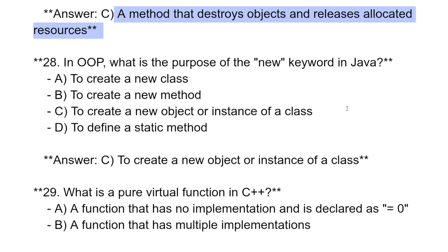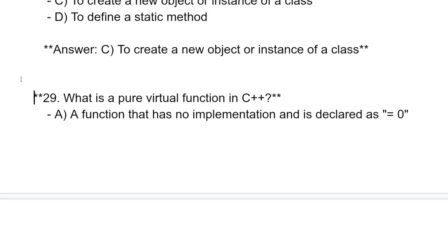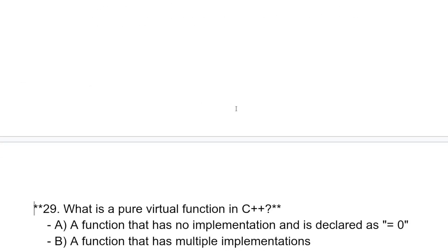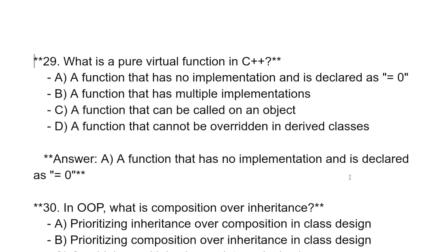In OOP, what is the purpose of the new keyword in Java? To create a new object or instance of the class. What is the pure virtual function in C++? A function that has no implementation and is declared as equal to 0 is called the pure virtual function.